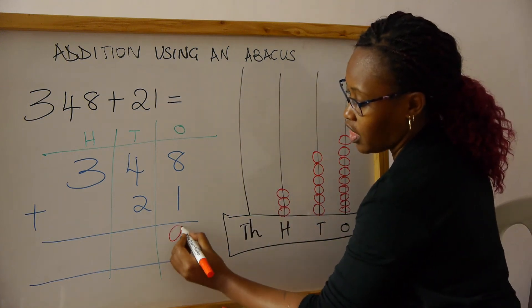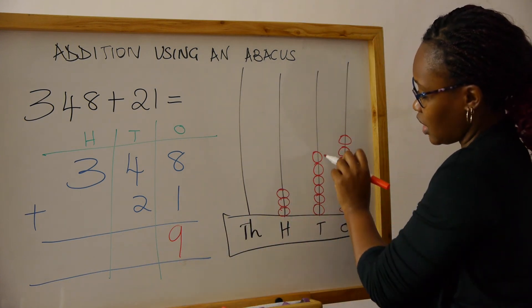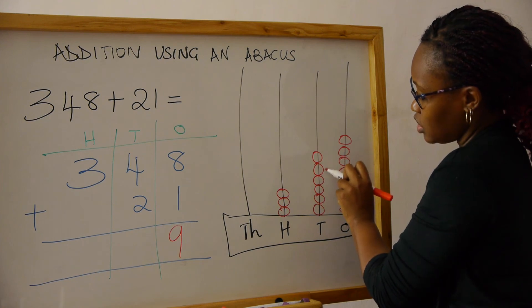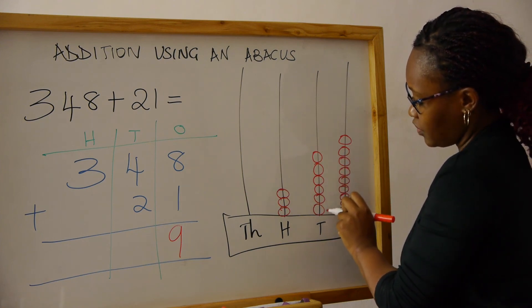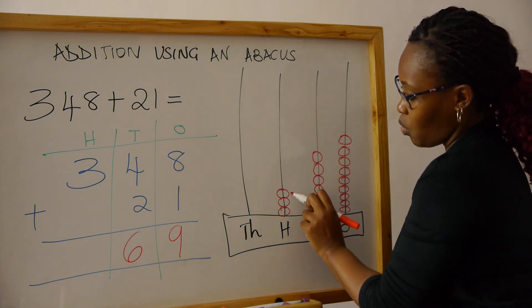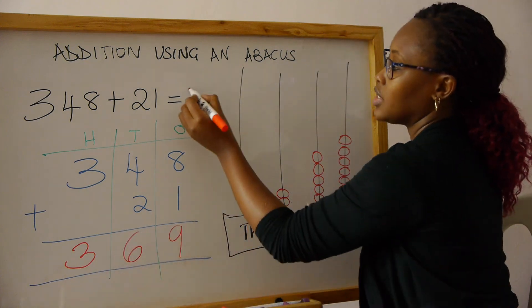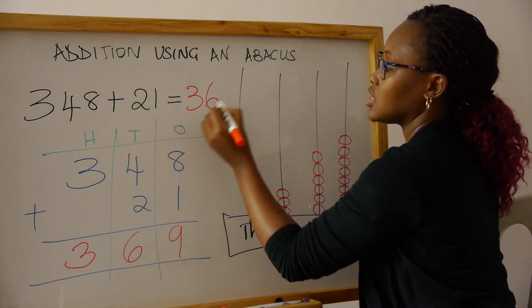Then we move to the tens. We start from the top—that's six. And then the hundreds column, one, two, three. So that's three. Our answer is 369.